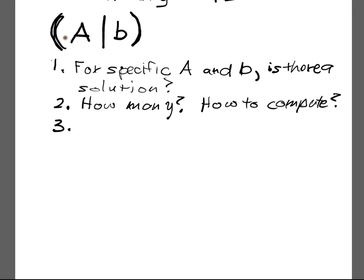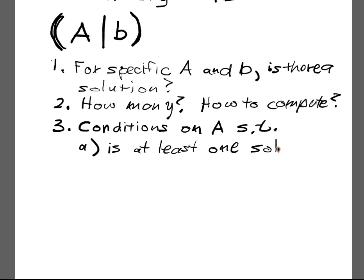So three, well let's suppose we want conditions on A such that we know that there's a solution for B. So part three A, is that we want conditions such that there is at least one solution for any B. That is, any B that I chose, this condition on A ensures that I'm going to have at least one solution. That's pretty powerful.